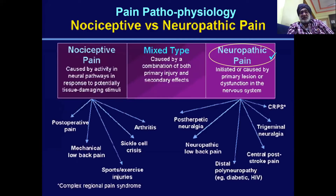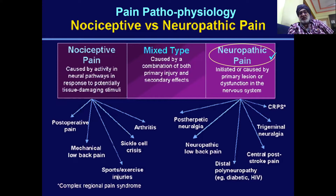Coming to the types of pain, there are mainly two types: nociceptive pain and neuropathic pain. Nociceptive pain is basically an acute pain which happens normally because of injury or surgery — the main causes being post-operative pain, trauma, or sports injury. These lead to acute pain, while neuropathic pain is initiated or caused by a primary lesion or dysfunction in the nervous system.